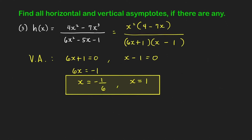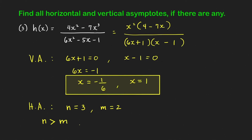For horizontal asymptotes, the degree of the numerator n equals 3, and the degree of the denominator m equals 2. Because n is larger than m, we conclude that there is no horizontal asymptote. So this function h only has vertical asymptotes and has no horizontal asymptotes.